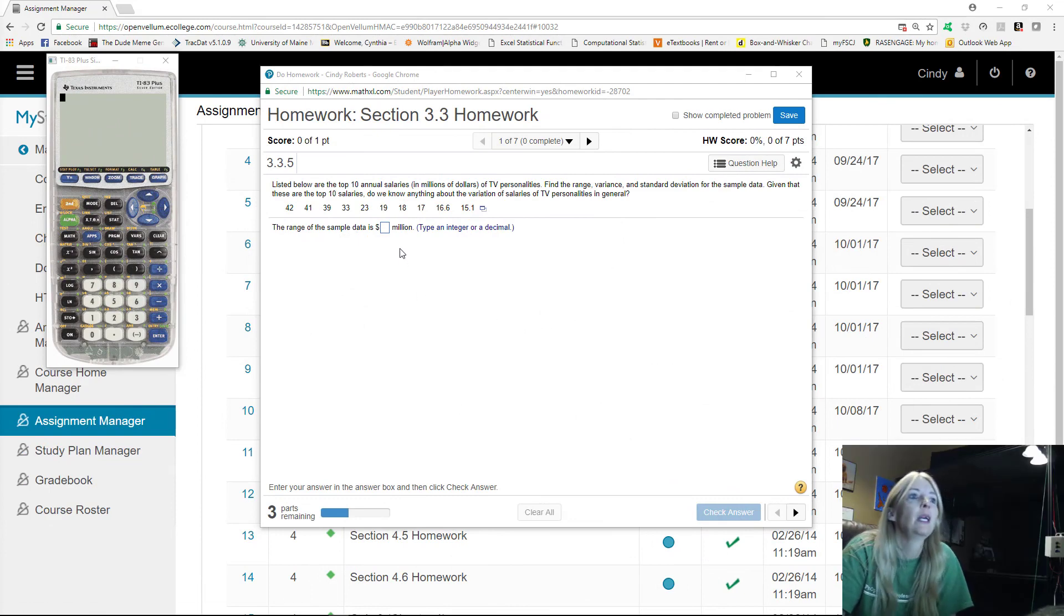Alright, hopefully you watched the first video and saw how to find the mean, median, and mode. You kind of already know how to do some of this stuff. I'm going to go a little quicker. This problem wants me to find the range, which is just the max minus the min, the variance, and the standard deviation.